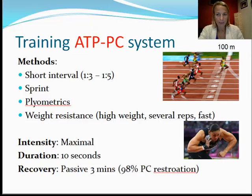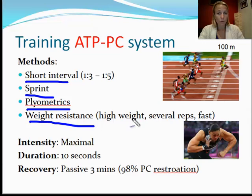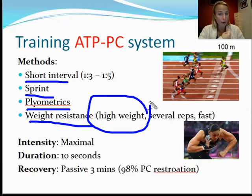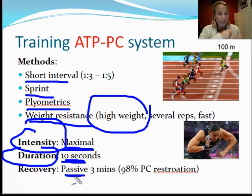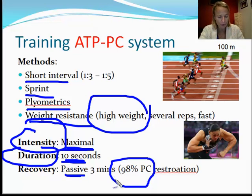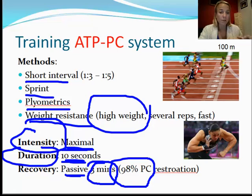Here are some examples of how we train the ATP-CP system: short interval training, sprint training, plyometrics, and weight resistance — using a very high weight with several explosive reps. Remember: intensity and duration. Maximal intensity, with duration specific to the energy system — about 10 to 15 seconds — and a passive recovery to enable PC restoration. To get 98% of full PC restoration, you need to be passive for three minutes. That's why sometimes AFL players will come off and rest on the bench for three minutes to restore their PC stores.